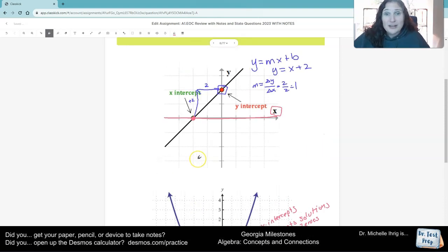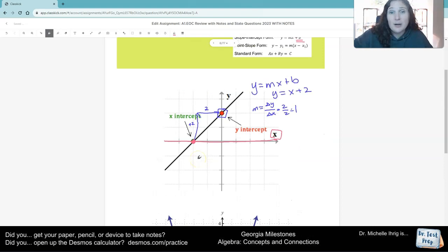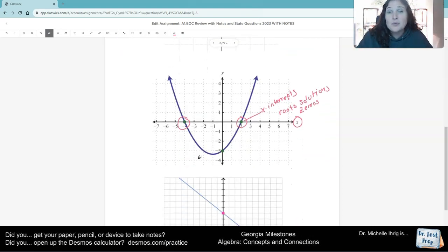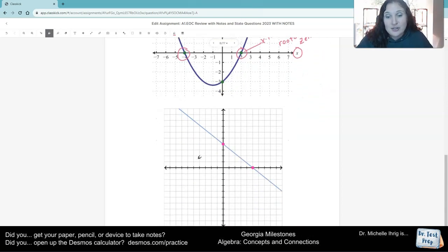So in linear, a straight line, we care about the y intercept the most. When it comes to quadratics, we care about the x intercept the most.